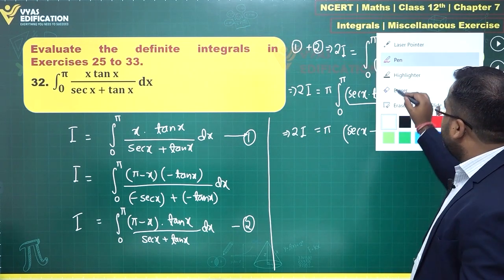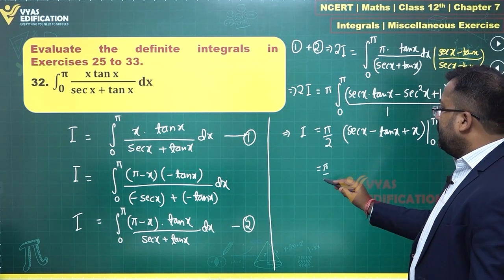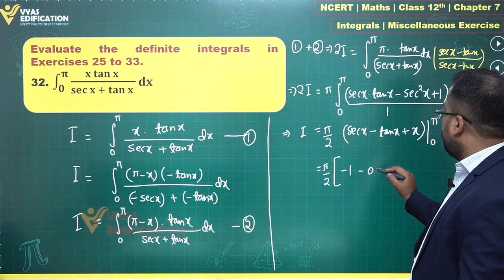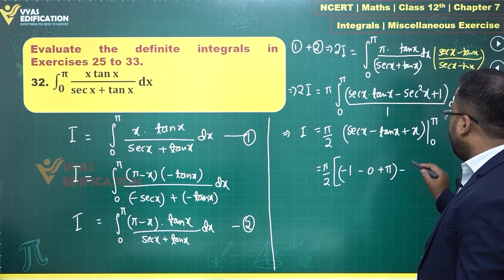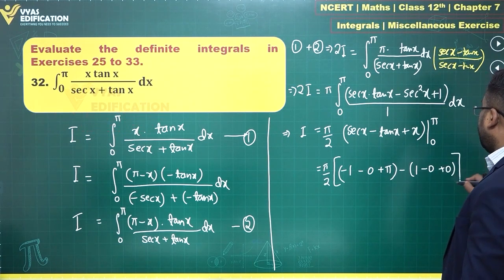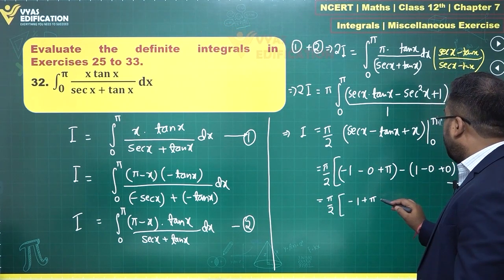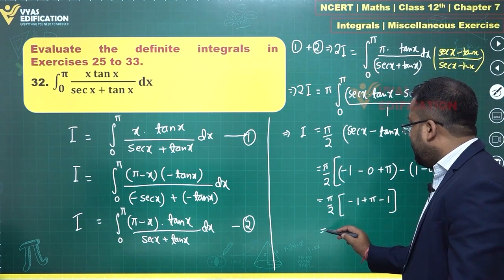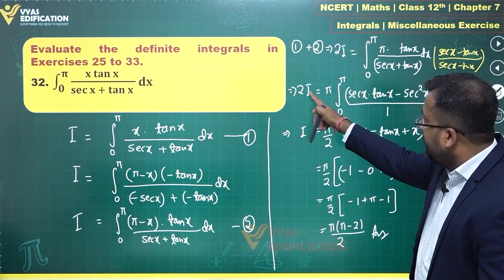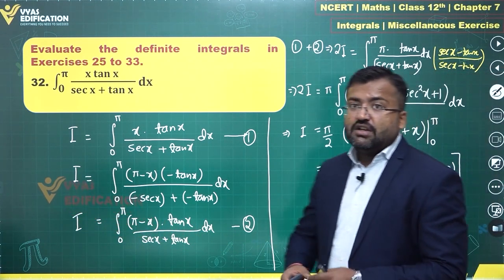So I equals π/2 times [sec x - tan x + x] from 0 to π. Substituting: sec π = -1, tan π = 0, plus π, minus (sec 0 = 1, tan 0 = 0). This gives π/2 times (-1 + π - 1) = π/2 times (π - 2). Therefore I = π(π - 2)/2, which is the required answer.